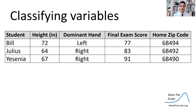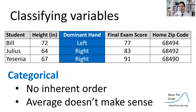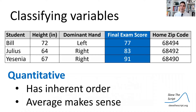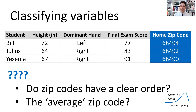Here's an example with data on three different students. We have their heights — this is quantitative: heights have an inherent order and finding the average height makes sense. We have their dominant hand, left or right — these are categories with no inherent order, and we can't average left and right. Final exam score is quantitative: there are higher or lower exam scores and it makes sense to find the average. How about zip code? Seeing numbers, I might think quantitative, but zip codes have no inherent order — they're just labels for different locations. Finding the average zip code wouldn't be meaningful. So even though there are numbers, this is fundamentally a categorical variable.